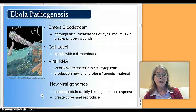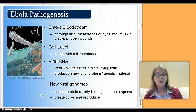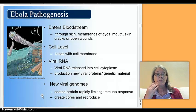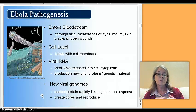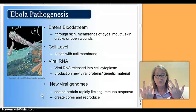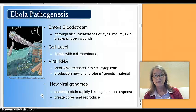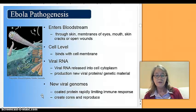As far as the actual disease path for Ebola — the pathogenesis — it enters the bloodstream through the skin or the membranes in your eyes, your mouth, and cracks in your open skin, meaning where you have damaged skin surfaces. It binds to your cell membrane. It's a viral RNA virus that takes over the functioning within the cell, like any other viral infection.